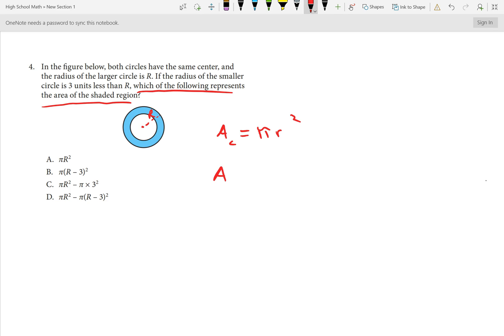Remember that the area of a circle is pi R squared. So, the area of our large circle is going to be pi times - we used cap R in this situation, so I'm going to change it to that. The area of our smaller circle, it says the radius is 3 units less than, so that's going to be pi cap R minus 3 squared.